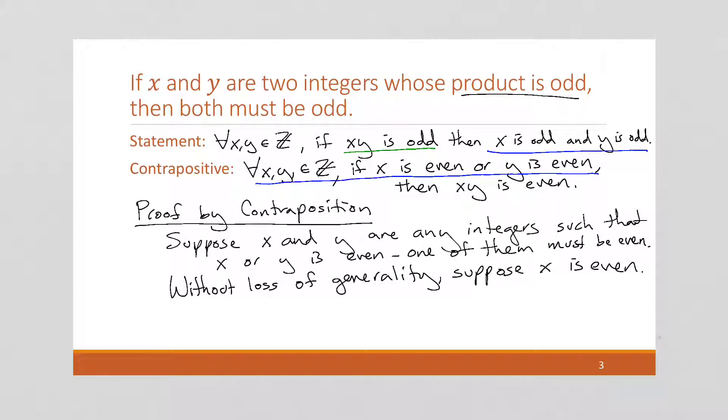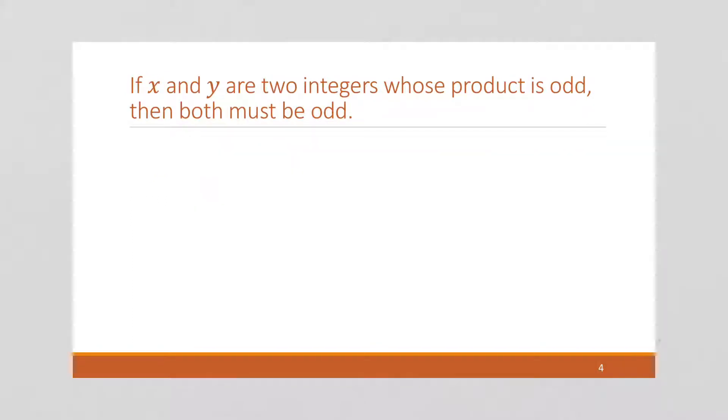Okay. I'm going to move to the next page for a little bit more space. So if x is even, then x equals 2k for some integer k. All right, that's the definition of even.